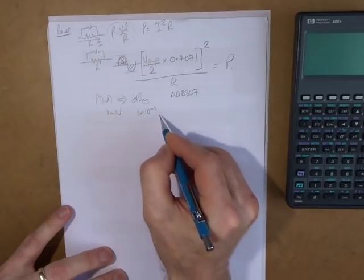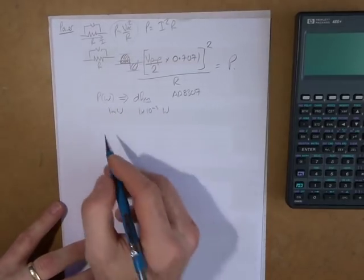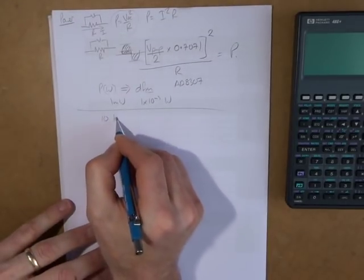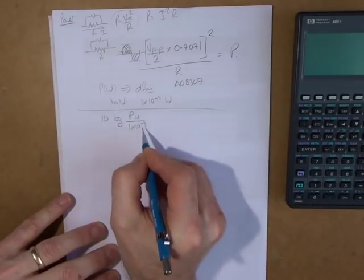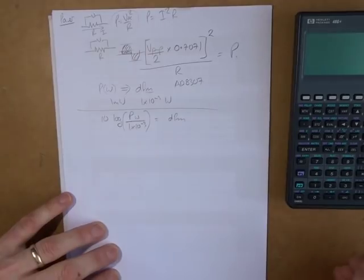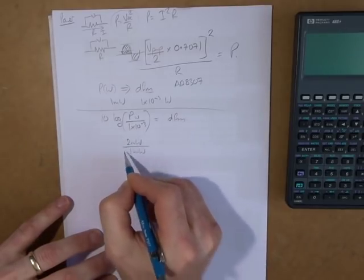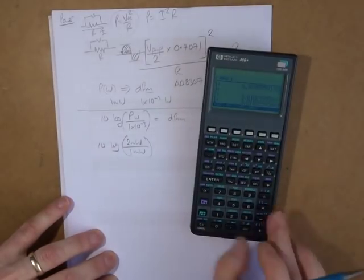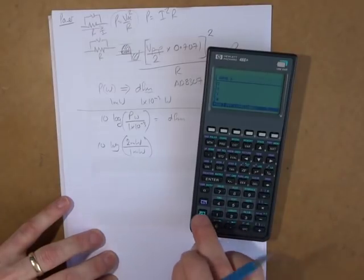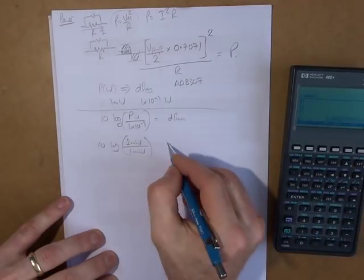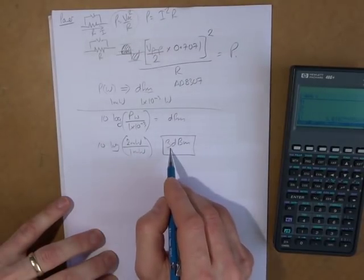One milliwatt is one times ten to the power of negative three watts. To create this dBm value, all we have to do is go 10 log of whatever our power is in watts, divided by one times ten to the power of negative three, and that will give us dBm. Let's go with two milliwatts referenced to our one milliwatt — 10 log of two divided by one equals 10 log 2, which comes out at three. So three dBm — that's what our two milliwatts is, referenced to one milliwatt.